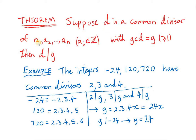Suppose d is a common divisor of the integers a1, a2, up to an. We will call the greatest common divisor of those integers g. We define g to be a positive integer. Then d divides g. So any common divisor of a set of integers will divide the greatest common divisor of those integers.